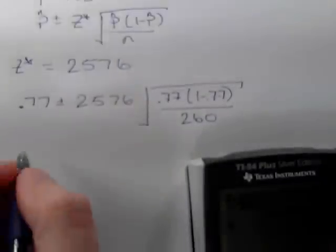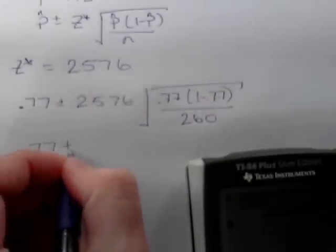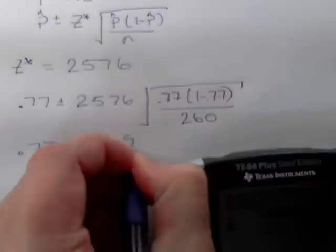This is the margin of error, so we have 0.77 plus or minus 0.0693.